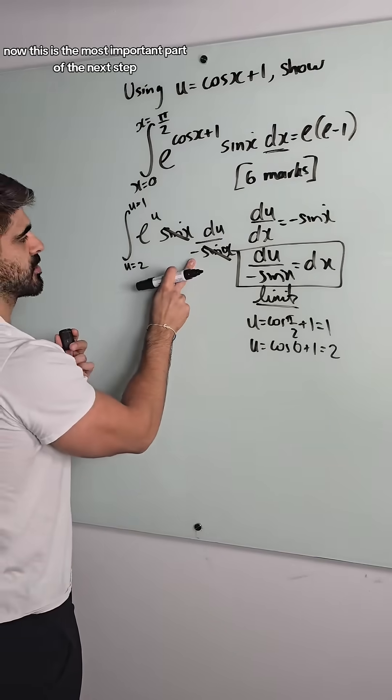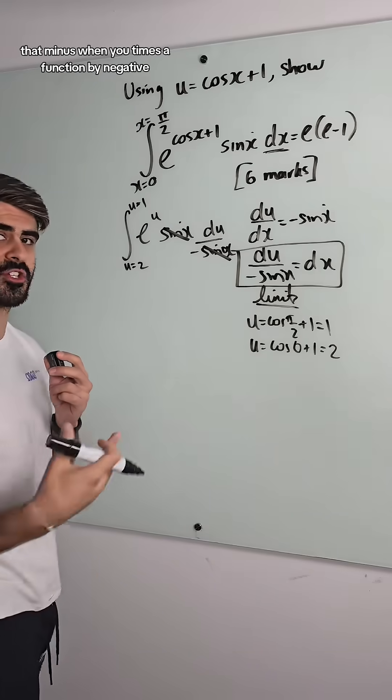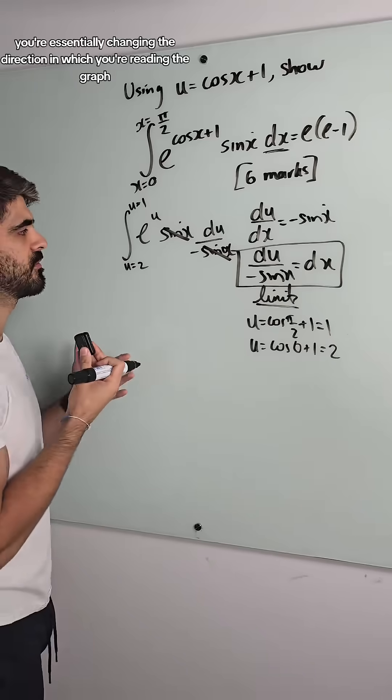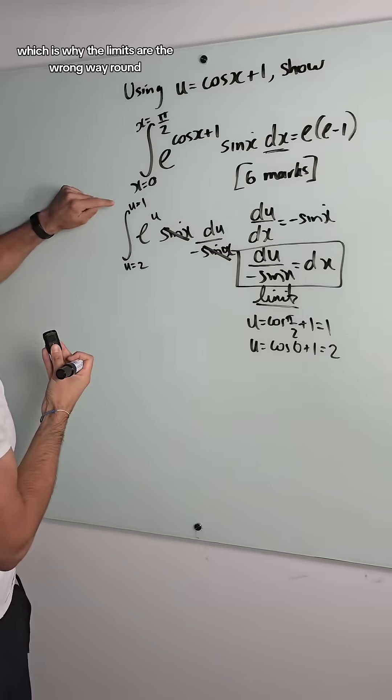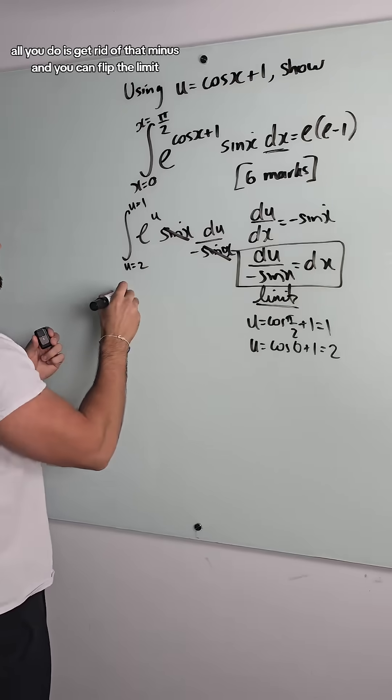Now, this is the most important part of the next step. That minus, when you times the function by negative, you're essentially changing the direction in which you're reading the graph. This minus means you're actually reading the graph backwards, which is why the limits are the wrong way around.